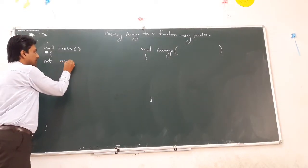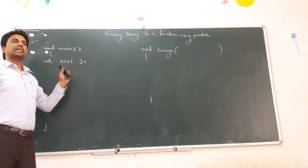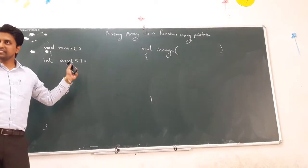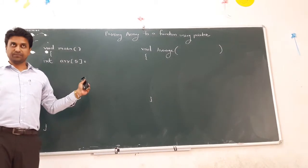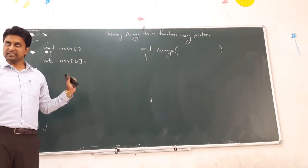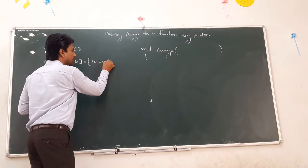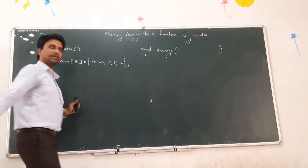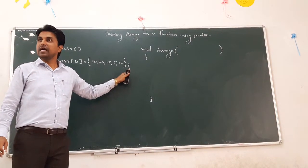The array is of type `int`, name of the array suppose `arr`. Next, subscript operator — specify the size of the array: five. If you initialize the array, the size is optional; if you declare the array, it is compulsory. We initialize the array with elements: 20, 10, 15, 5, 12. This is called static initialization of the array elements — we do not take the array element values from the user at run time.